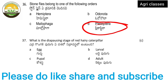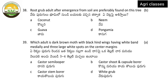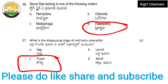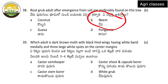What is the dispersing stage of red hairy caterpillar? Egg stage, larval stage, pupal stage, or adult stage? The correct answer is pupal stage. Next: root grub adults, after emergence from soil, are preferably found on which tree — coconut, neem, Goa, or Pongamia? The correct answer is B — neem. Trichia consanguinea is the groundnut root grub; they are found on neem trees.